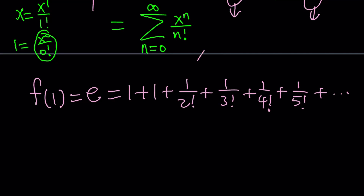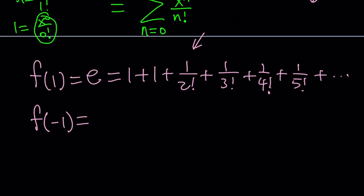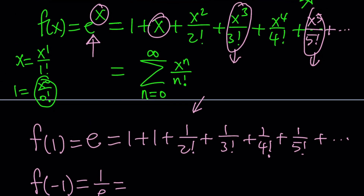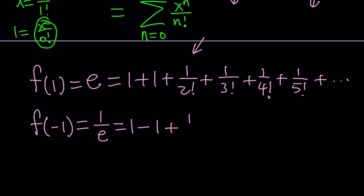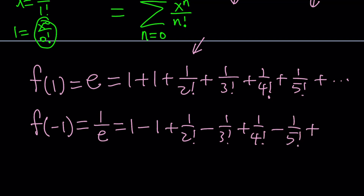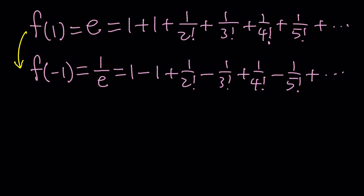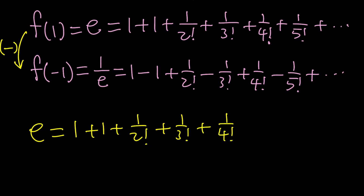Now I want to get rid of the even terms, so I need to replace x with negative 1. Doing that with e^x gives e to the power negative 1, or 1 over e. On the right-hand side, I get 1 minus 1 plus 1 over 2 factorial minus 1 over 3 factorial plus 1 over 4 factorial minus 1 over 5 factorial, and so on. If you add these two equations, those terms will just disappear — so be careful, you don't want that.